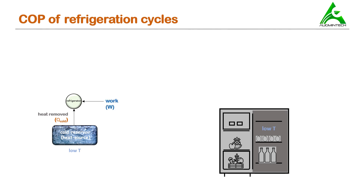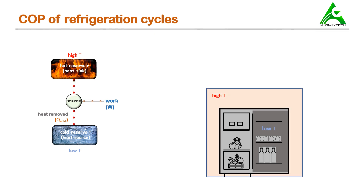As we have already studied, in a refrigerator the compressor does the work. Once it starts functioning, heat starts getting extracted from inside of the refrigerator to the outer space, which is known as the hot reservoir. And because heat flows finally to this space, it is also called the heat sink. It is at a higher temperature, so in this situation the space outside the refrigerator can be considered as the heat sink.